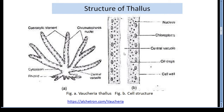The cytoplasm contains many nuclei, chromatophores and reserve food. It is differentiated into an outer thick layer and an inner layer. The outer layer contains numerous discoid chromatophores. The chromatophores contain chlorophyll A, chlorophyll B and beta-carotene.